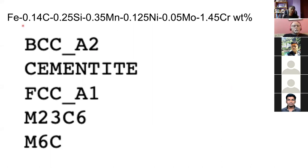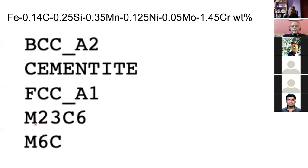In this particular calculation for a low-carbon steel — 0.14 wt% carbon with additions of silicon, manganese, nickel, molybdenum, and chromium — my metallurgical experience tells me which phases to include. If in doubt, you can include all phases in the database. I've limited the calculation to these phases, then specify the chemical composition in weight percent or mole fraction. BCC A2 is ferrite, FCC A1 is austenite, and we also have M23C6 and M6C carbides. M stands for metal atoms because several metal atoms share the metal sub-lattice.